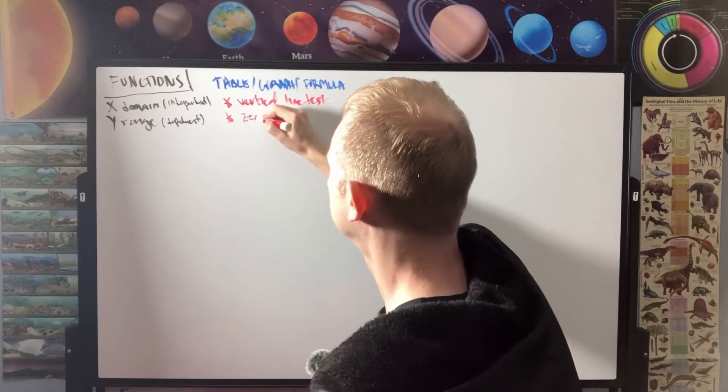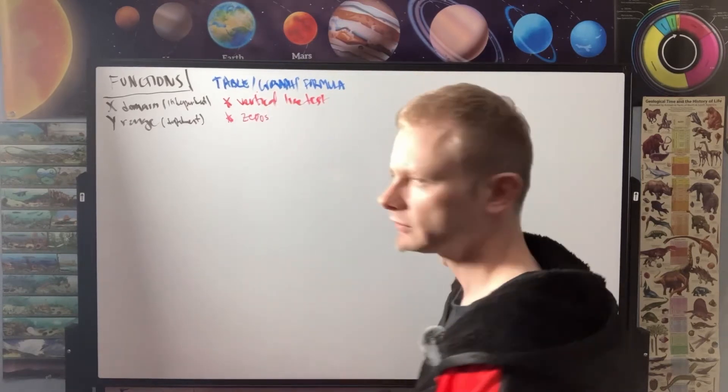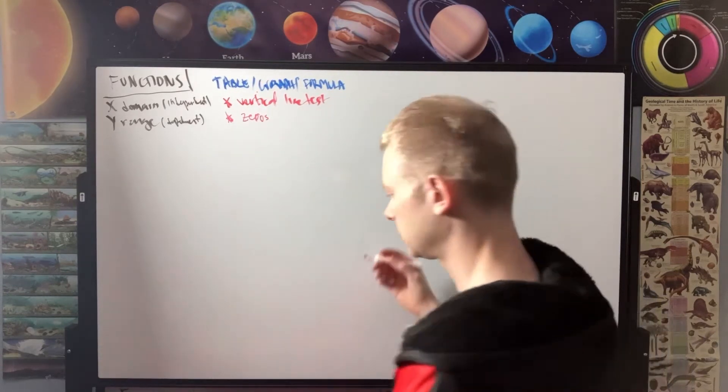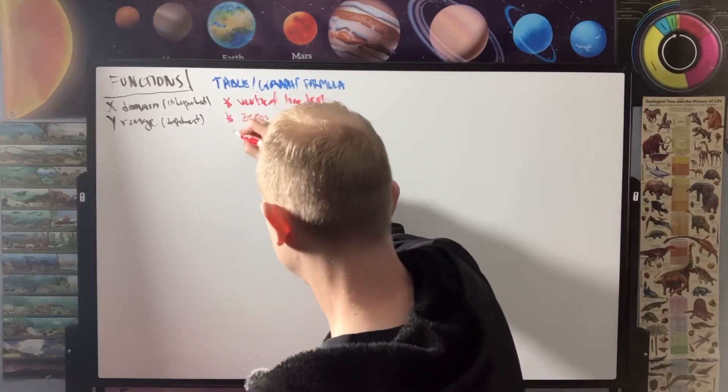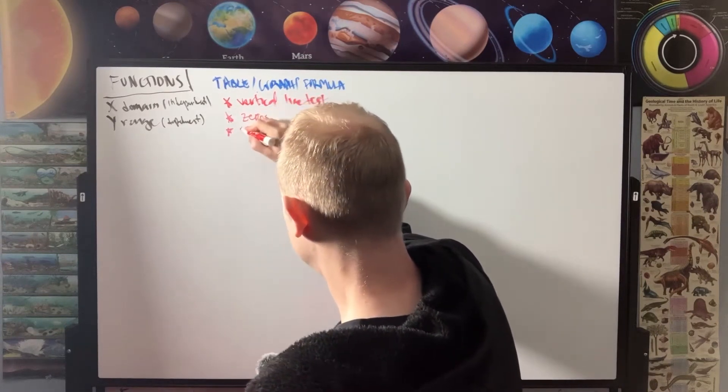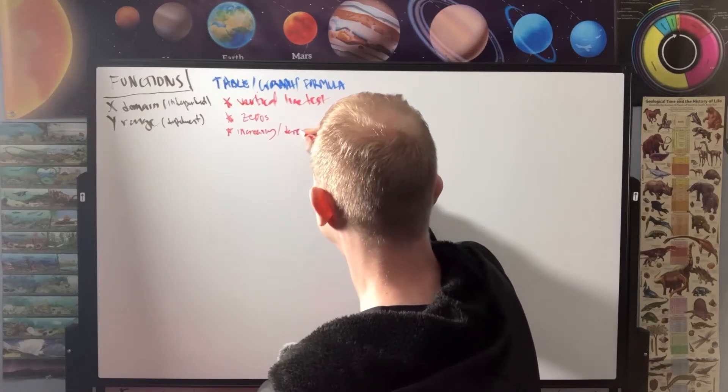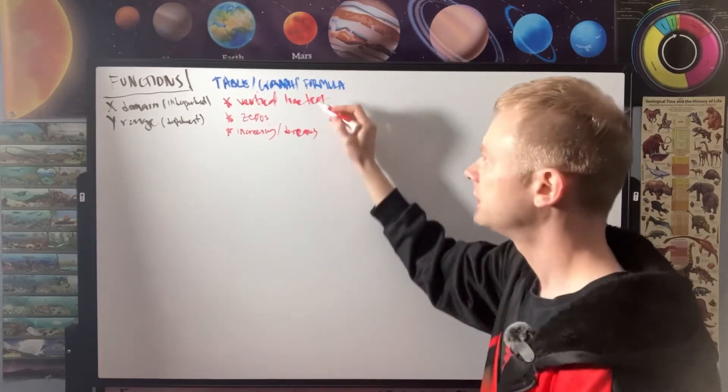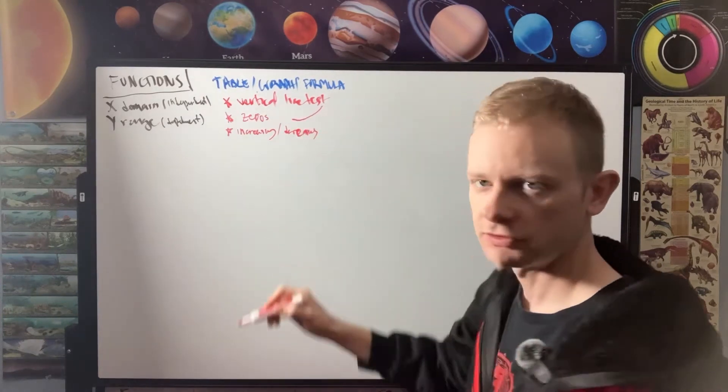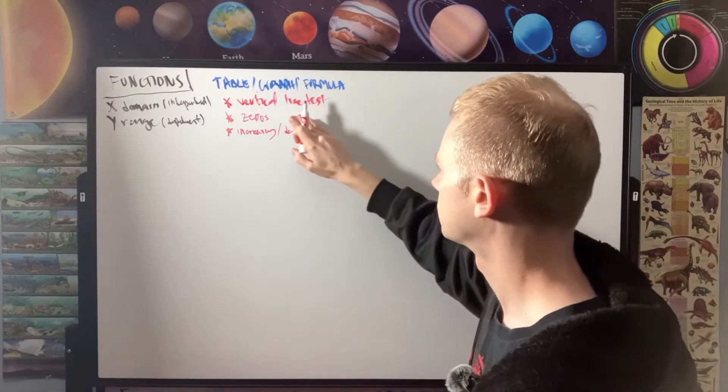You can also find zeros of the function. That's, of course, when it hits the zero on the y. We might notice that some functions are increasing or decreasing. And this would be a continuous increase or a continuous decrease.